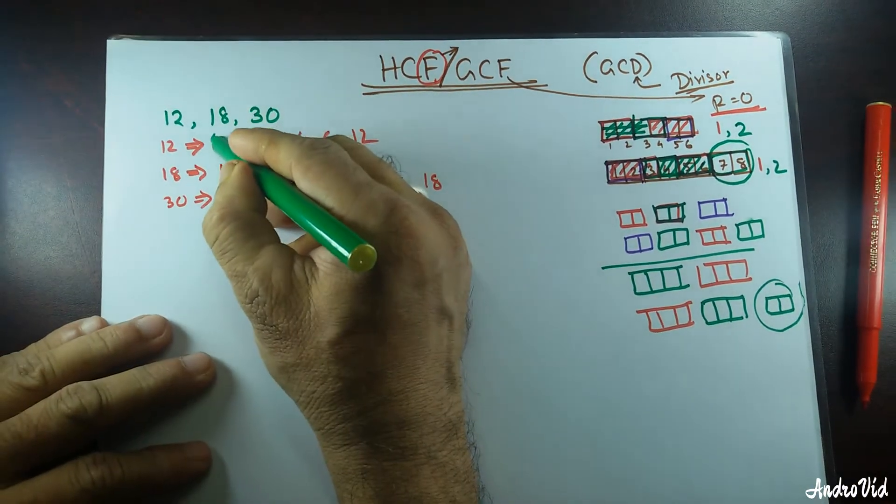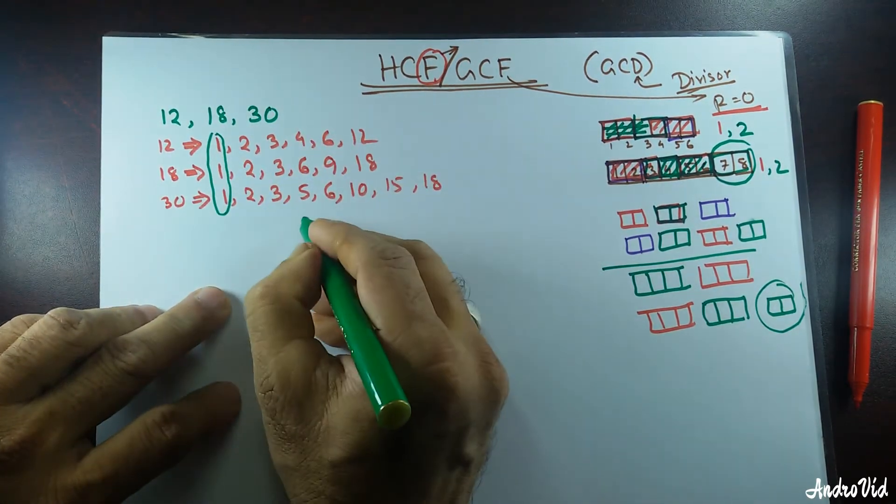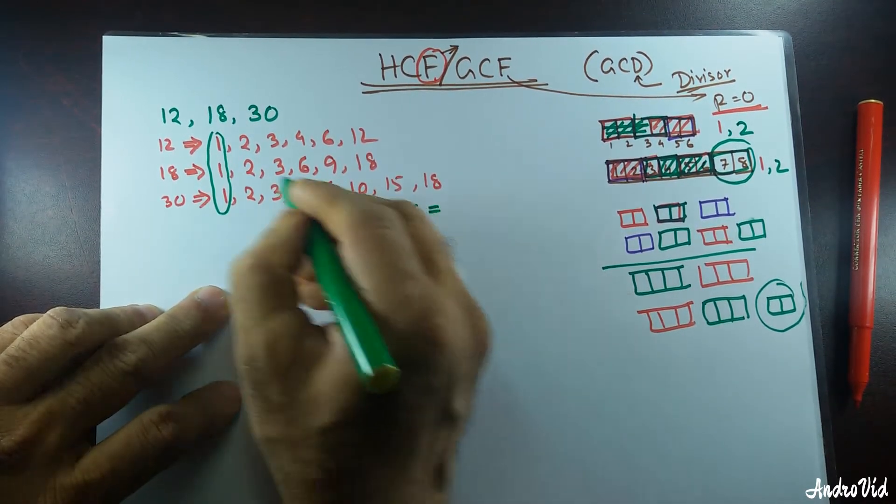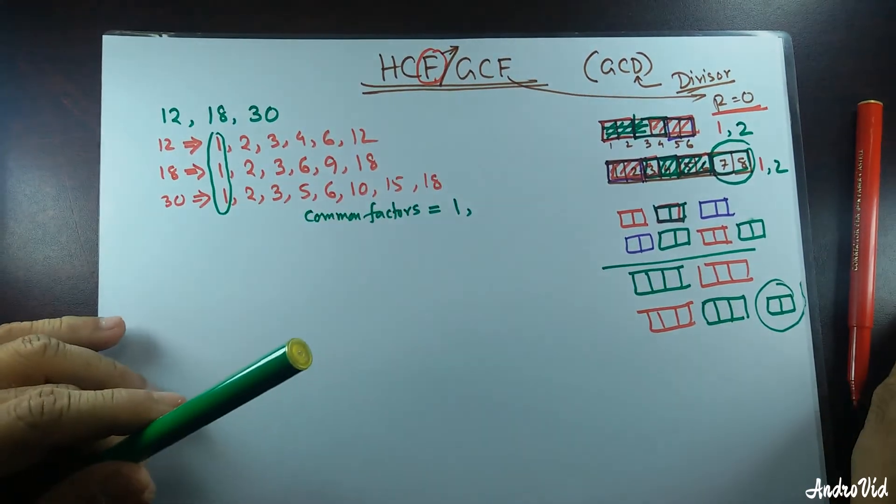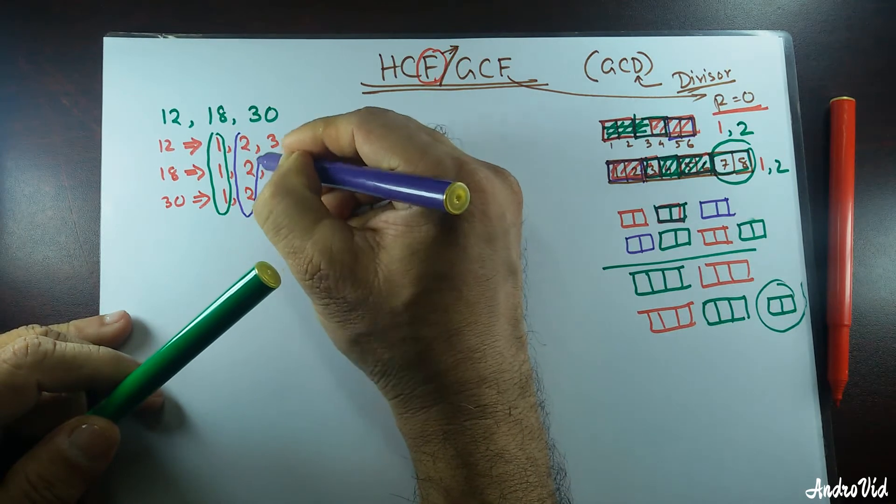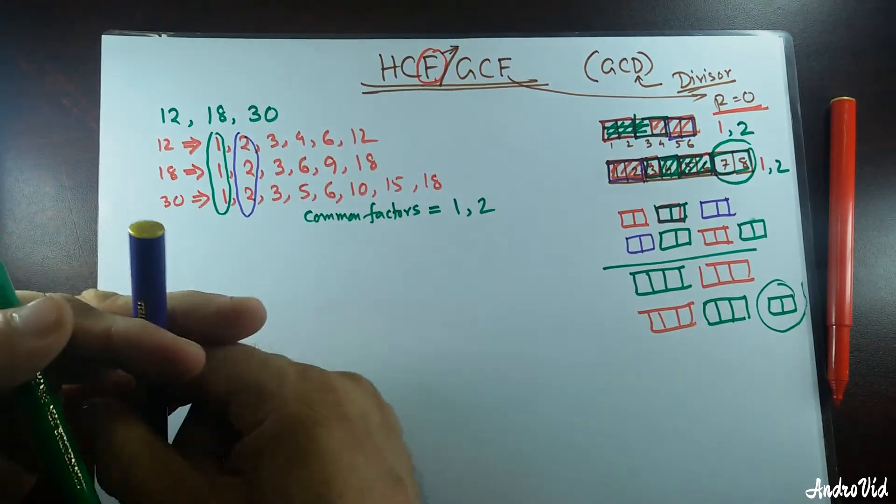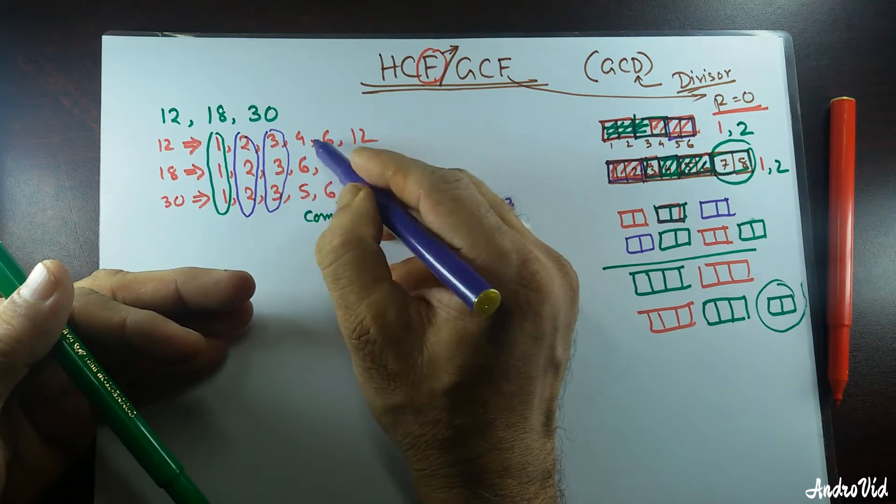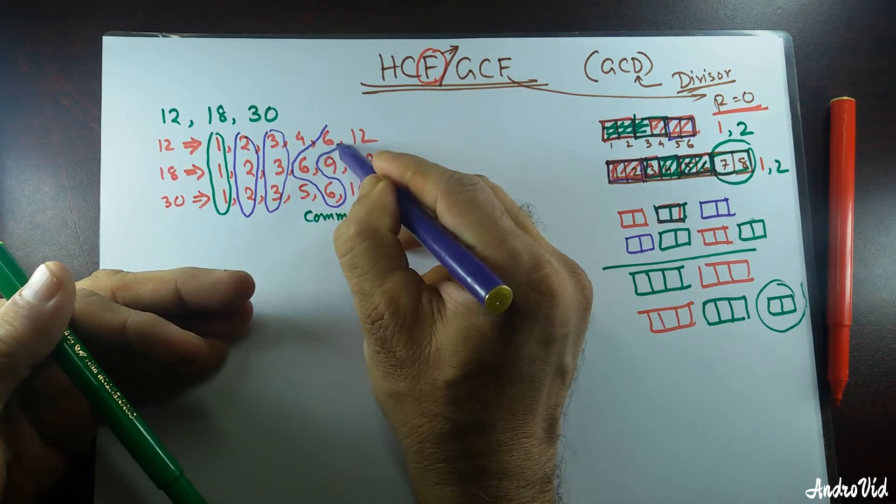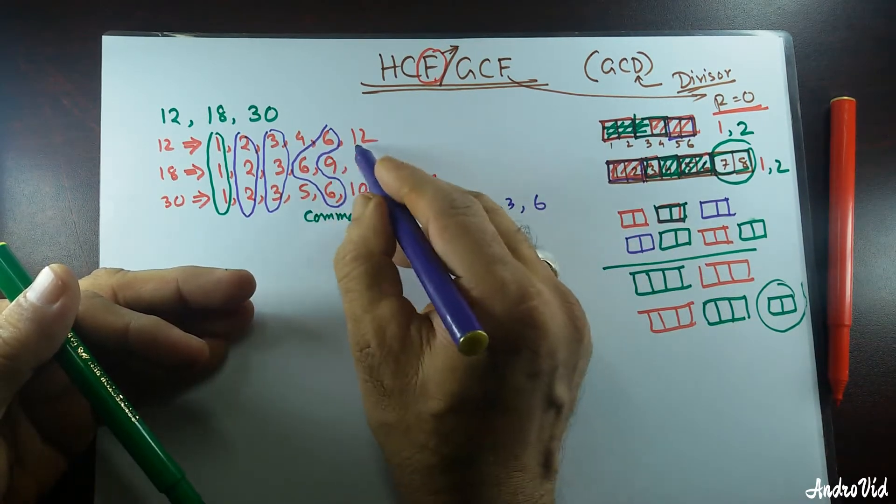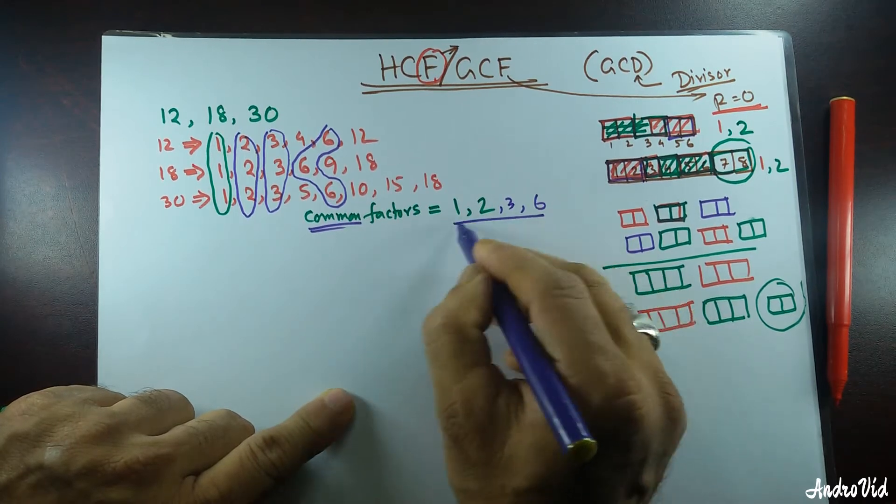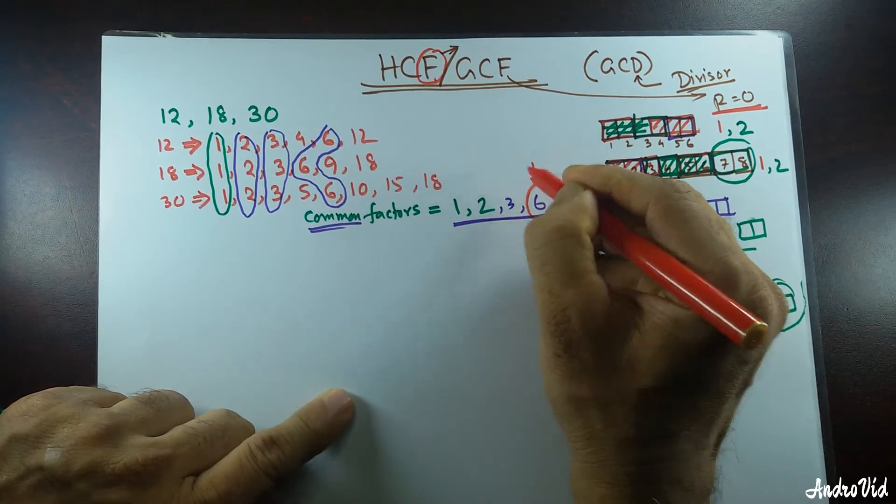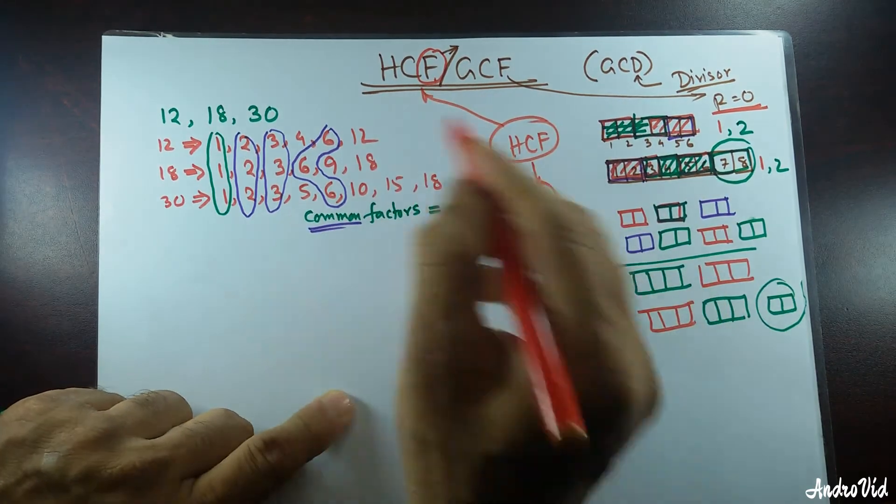Now, look at this. 1 is a common factor for all three of them. Common factors of these three numbers are 1, and then I have another one, 2. I have common factor 3. Then, I don't have 4 all the way, but I have 6. Among these 4 common factors, 6 is the largest. Largest common factor. So, this is known as HCF. This is the basic concept.